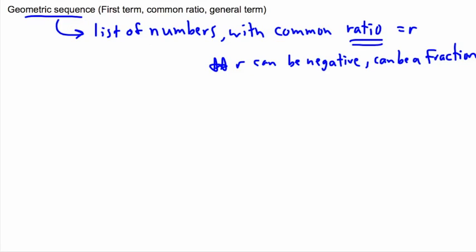So don't be surprised if your ratio is a fraction or if it's negative, that's okay too. So let's do some examples then. Maybe we'll look at the list of numbers 1, 2, 4, 8, 16 dot dot dot. Well, the first term is 1. It's important just to be able to pick out these things.